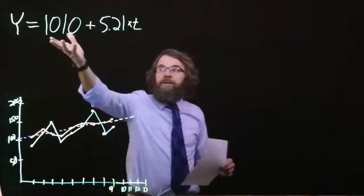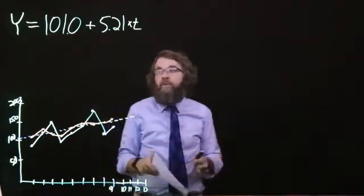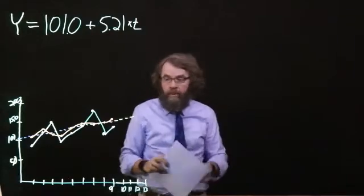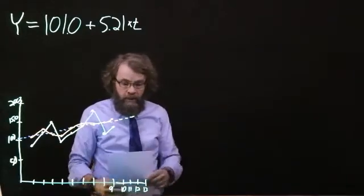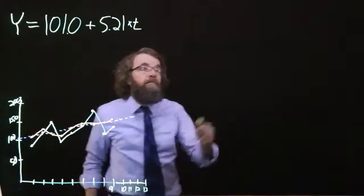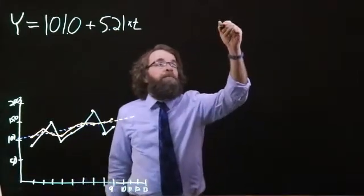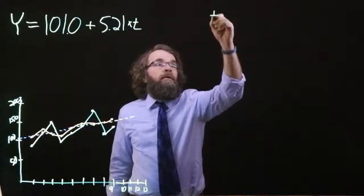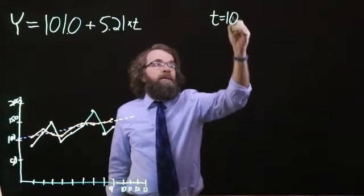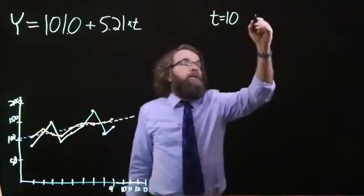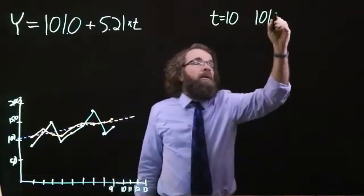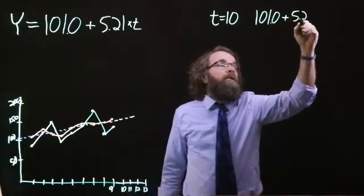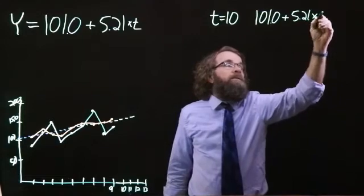We know the intercept is 101 and the slope is 5.21. Let's see what the next period will be. We have nine periods so we're talking about periods 10, 11, 12, and 13. For the next period when t equals 10, we have 101 plus 5.21 times 10.